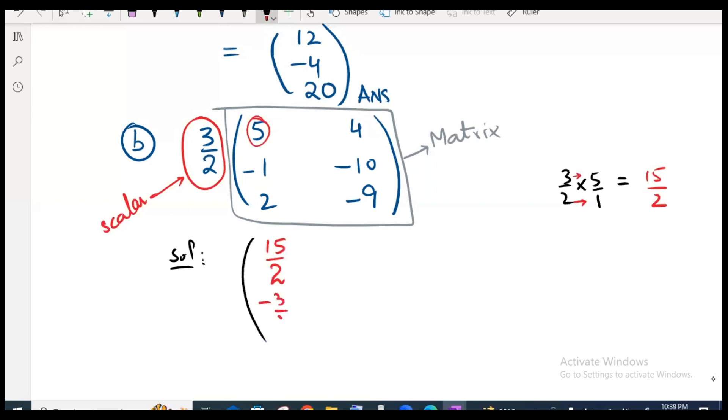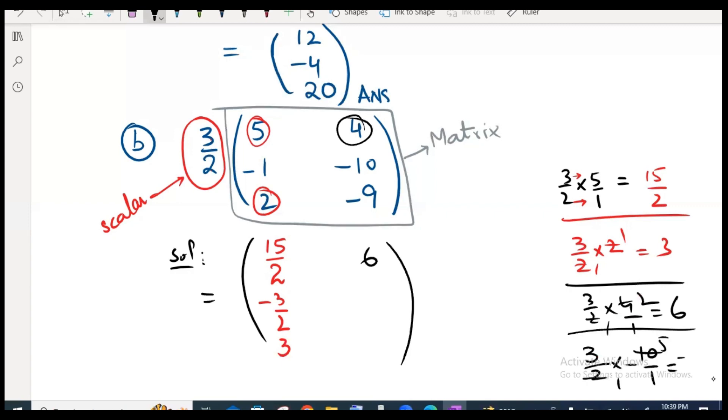Now minus 3 over 2. Then 3 over 2 times 2. So 3 over 2 times 2, 2 on the 2, it will be 3. So I'm going to write 3 here, minus 15. And last, minus 3 over 2.